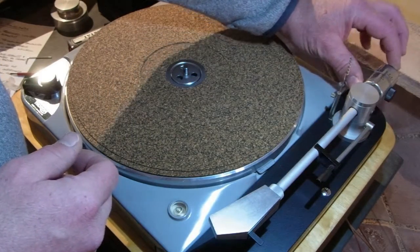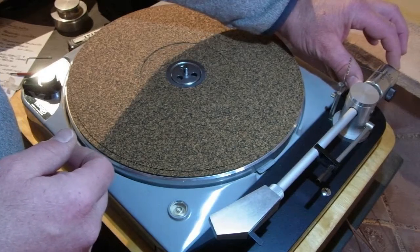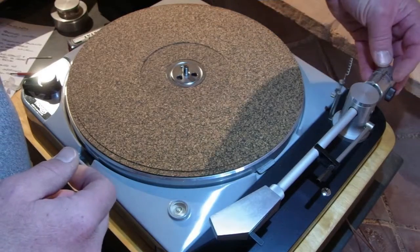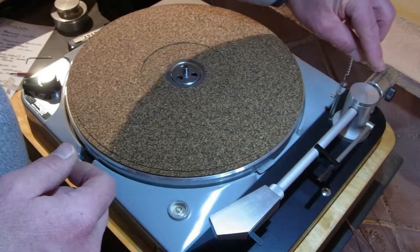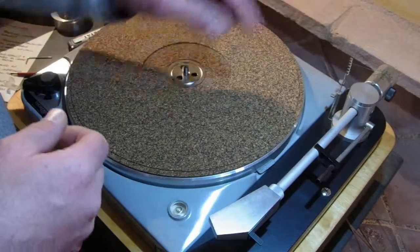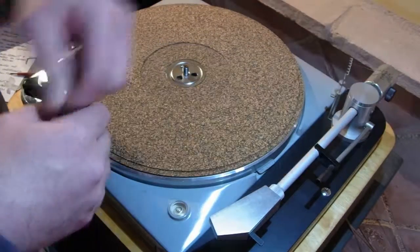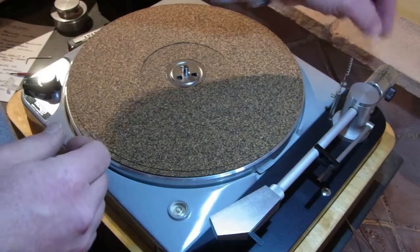This counterweight contains two independent weights. The position of each weight can be set by these end caps with a graded scale on here. Turning this end cap moves the position of the weight around the central stub.